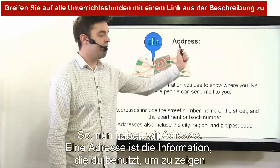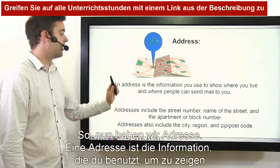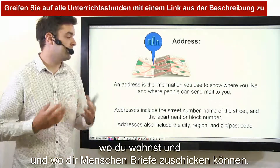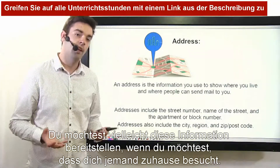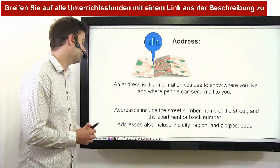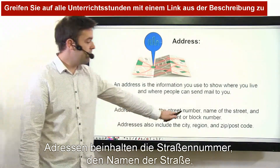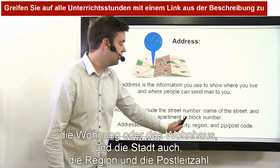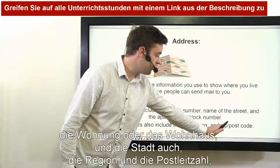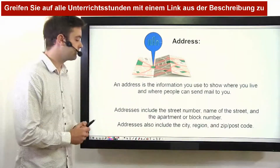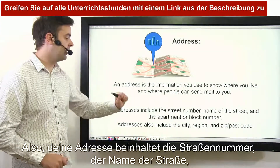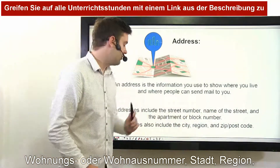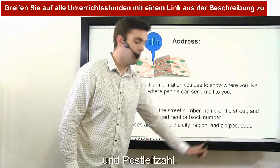Now we have address. An address is the information you use to show where you live and where people can send mail to you. You might want to provide this if you want somebody to meet you at your house. Addresses include the street number, name of the street, the apartment or block, and also the city, region, and zip or postcode, depending on the country.